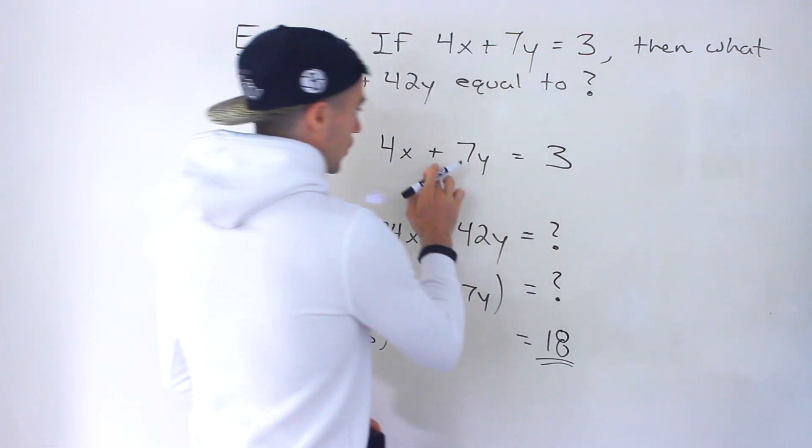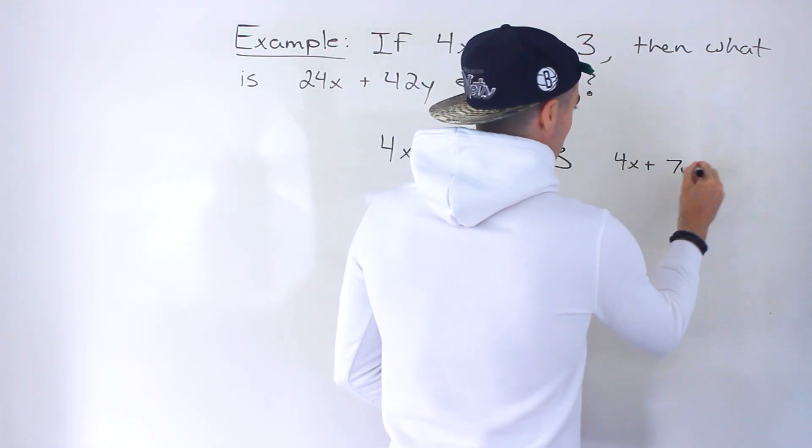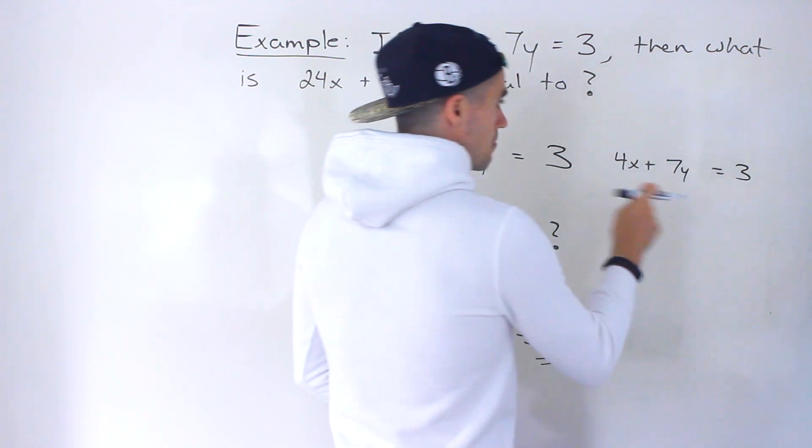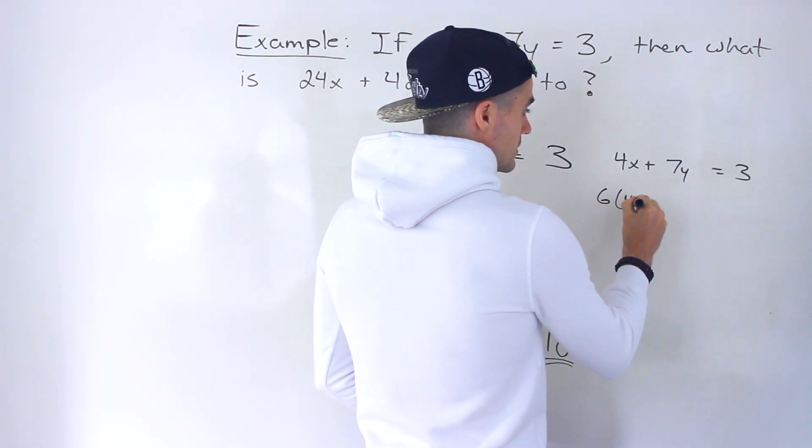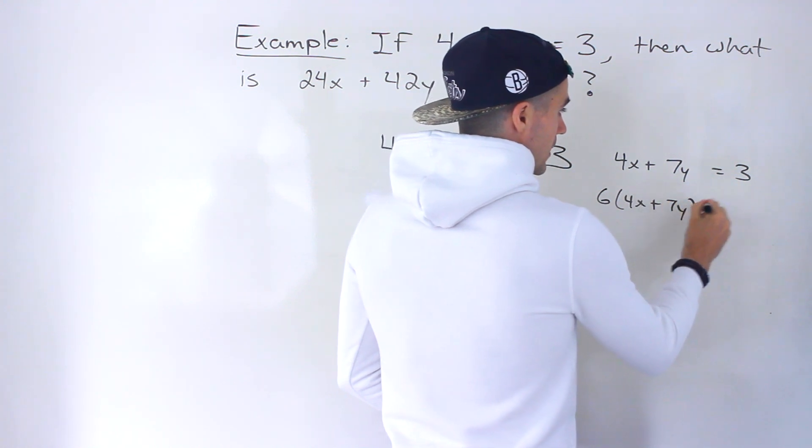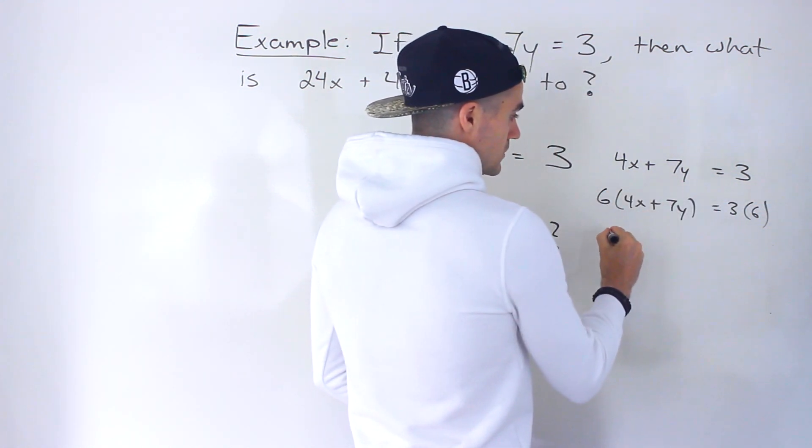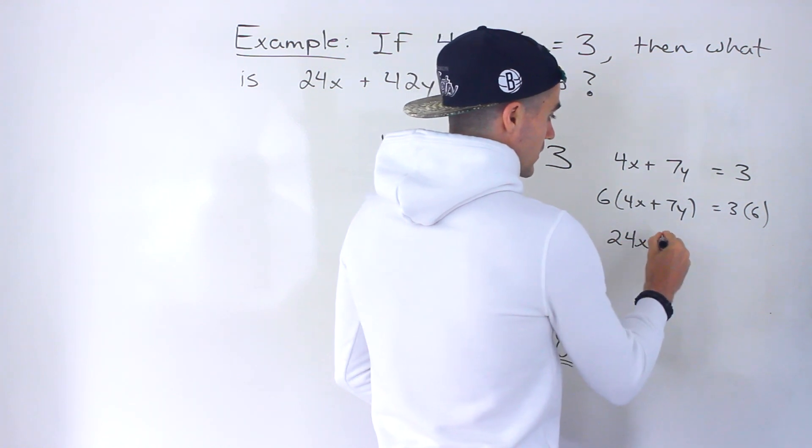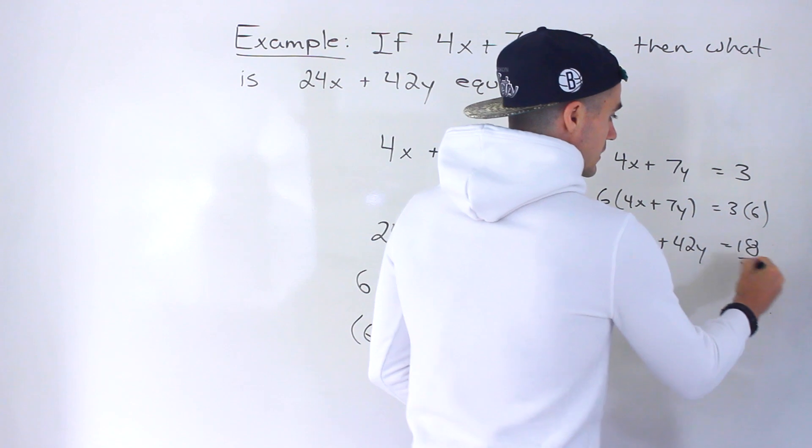Okay, another way to do it is if we work with this instead, what we can do is multiply both sides by 6. So we would multiply this by 6, and we would multiply this by 6. And then notice when we distribute into the bracket, we'd end up with 24x plus 42y, and that would be 18.